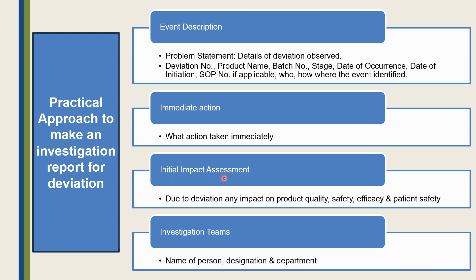Next is the initial impact assessment, where you elaborate on the initial impact with respect to product quality and impact on batches. For example, you can provide the rationale that the misplaced document is a controlled copy and the master copy is available, or it is available in electronic format. Next is the investigation team section, where you define who is involved in the investigation, including the name of person, their department, and their designation.